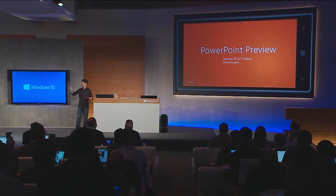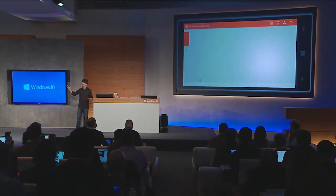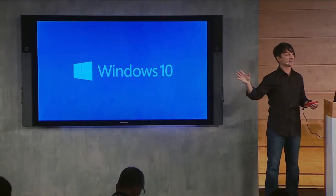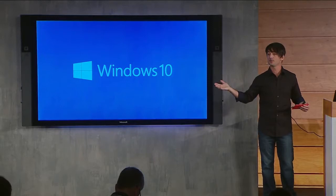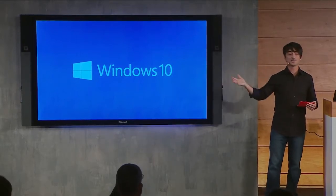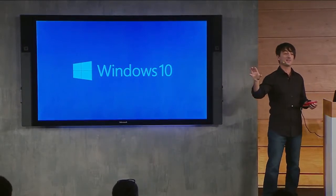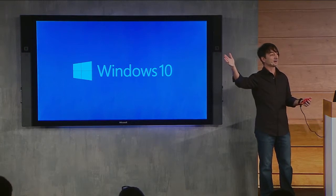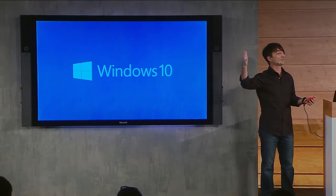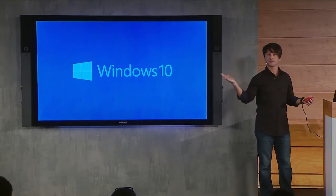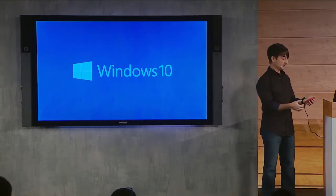I want to point out that recent document list — it does roam from device to device, from version of Office to version of Office. So if I'm using full Win32 Office on my PC and editing a document in my OneDrive or OneDrive for Business, that recent list roams across devices.